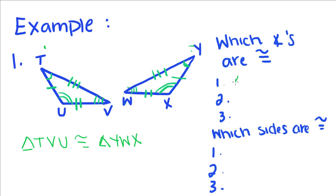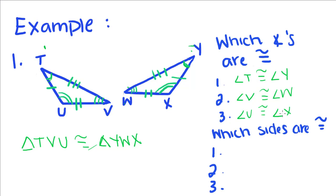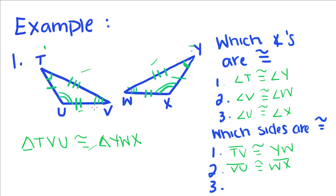We have to name them the same way because corresponding angles and corresponding segments have to be congruent. This means angle T should be congruent to angle Y — this has one arc and this has one arc, so they are congruent. Angle V has to be congruent with angle W — that's three marks and that's three marks, we're good. And angle U has to be congruent to angle X — two marks and two marks, we're good. Side TV has to be congruent with YW, which is correct because they're both marked the same way. Segment VU has to be congruent with WX — two marks, we're good.